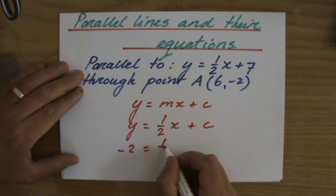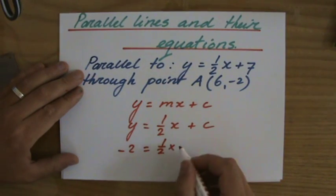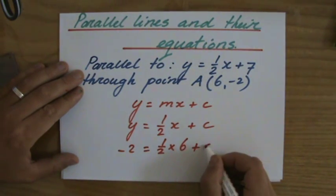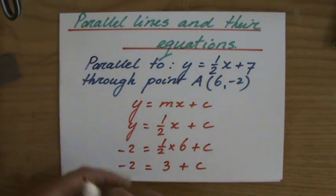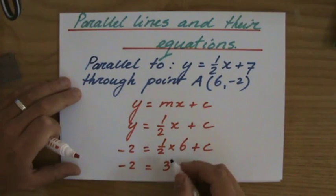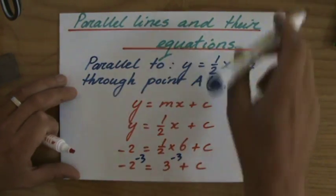So minus 2 equals a half times 6, which is 3, plus c. Rearranging the formula, I take away the 3 here, so I'm going to take away the 3 there.